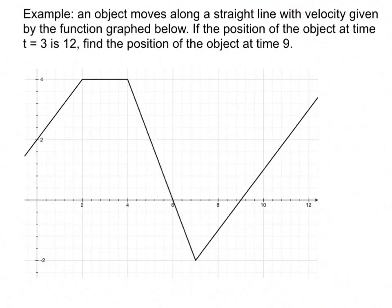So let's look at this last example that I have. An object moves along a straight line with a velocity given by the function graph below. So this thing is the velocity function. If the position of the object at time 3 is 12, find the position of the object at time 9. So notice I've got a similar setup here, right? They're telling me the position of the object at time 3, and they want to know the position of the object at time 9.